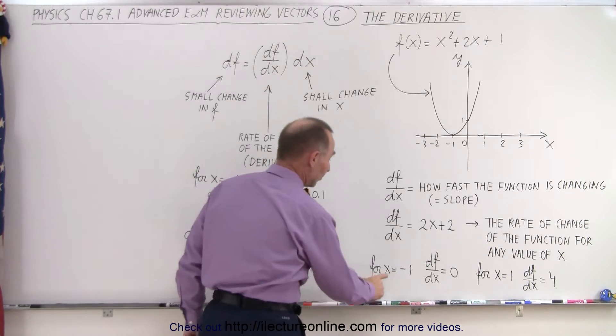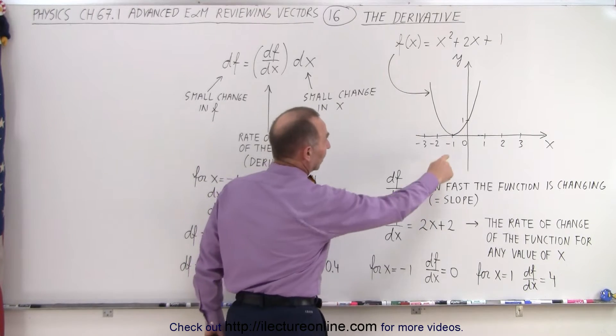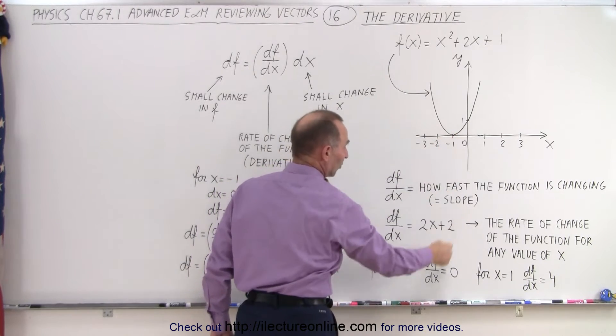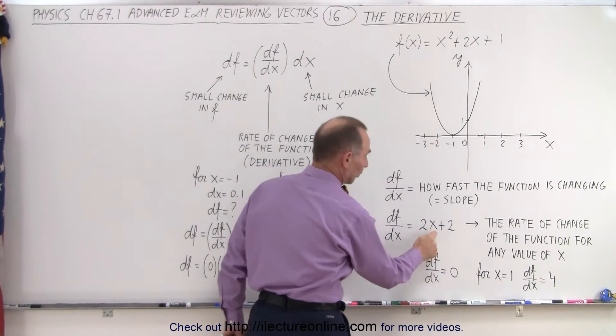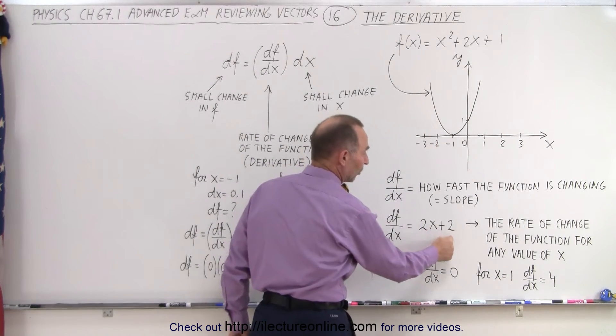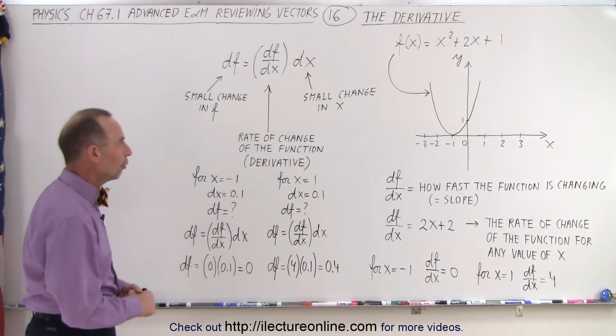So when we take a look and say for x equals negative 1, what is the slope? What is the derivative? Well, at negative 1, we see the slope is equal to 0. And at x equals 1, well, all we have to do is plug in a 1 here. We get 2 plus 2 is 4. We see that the slope is equal to 4. In other words, the derivative of that function is equal to 4.